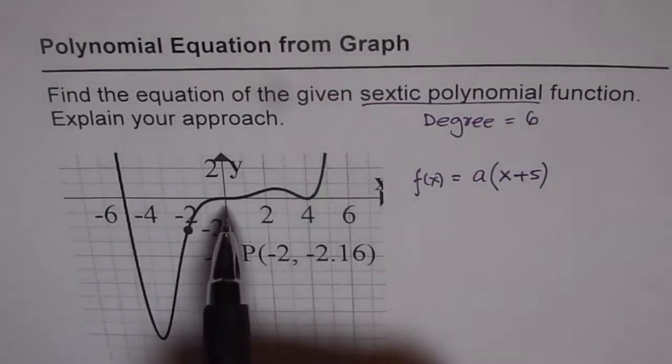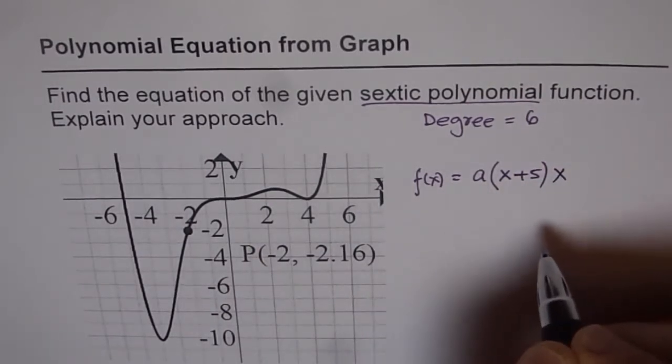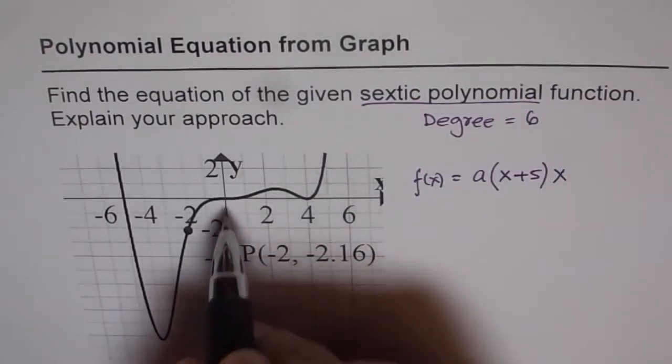Now the next zero is at the x intercept of 0 itself. So at the origin. So there you go x. Now the degree or the order of this zero seems to be odd and kind of 3.